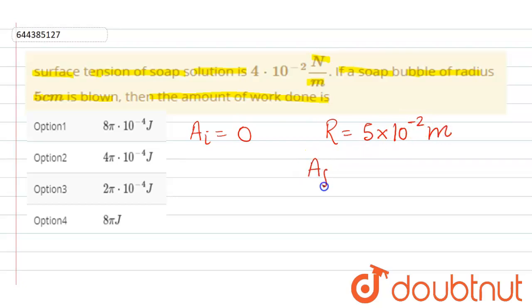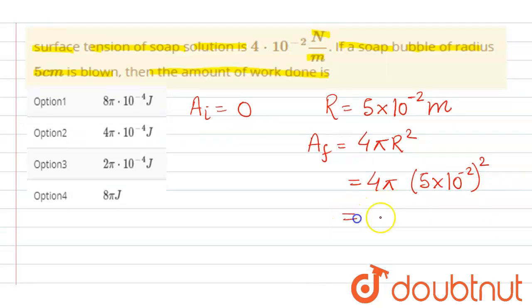The final area can be determined by the formula 4πr². That means it will be equal to 4π × (5 × 10^-2)², which comes out to be 100π × 10^-4.